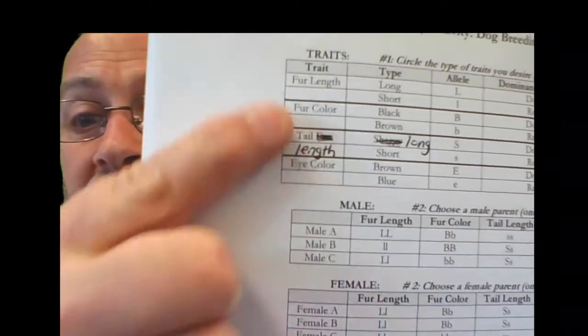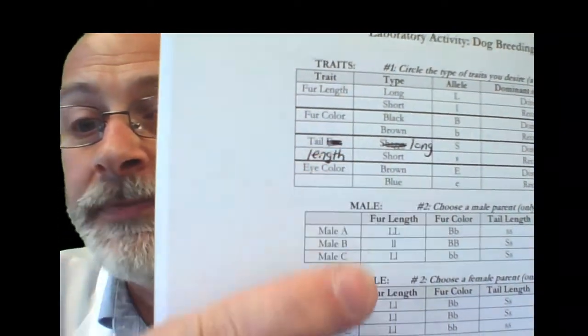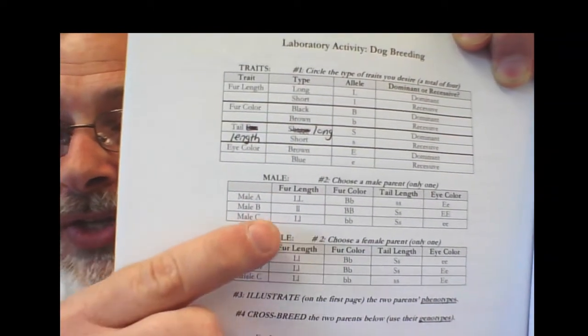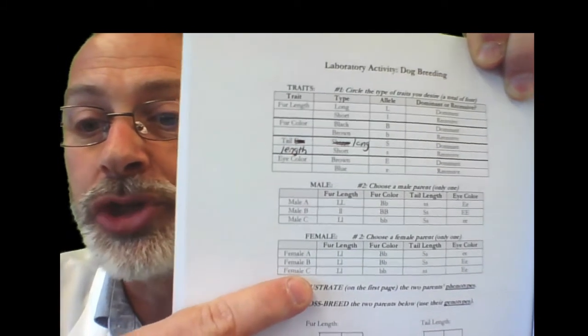Reading on, step two: now select a male and female parent from the available parent dogs from the table, again on the following page, page 186. Based on the traits or characteristics that you selected in this first section, here are the males and the females, three males and three females for you to choose from.